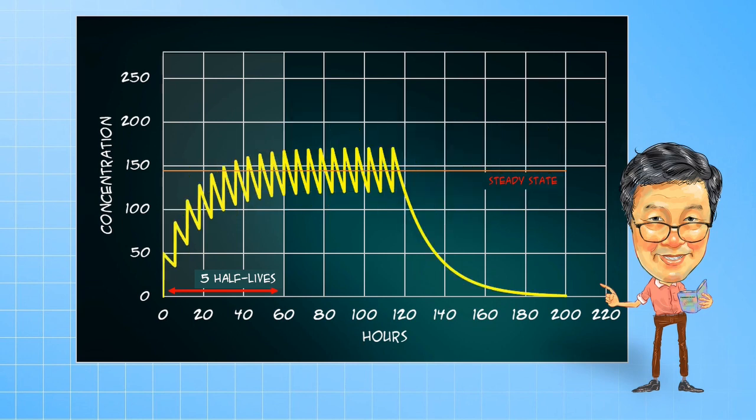Observe how, as the dosing interval shortens to 6 hours, the time to reach steady-state remains unchanged. However, the fluctuations reduce and the accumulation increases.